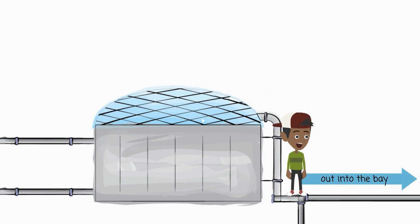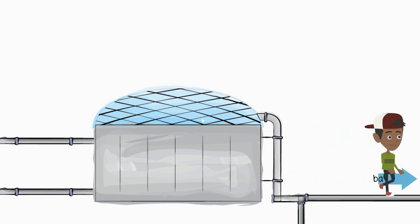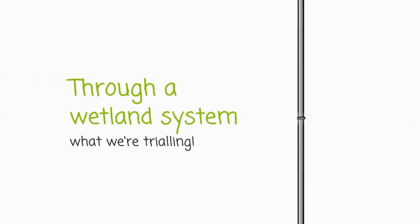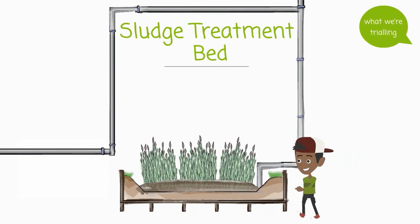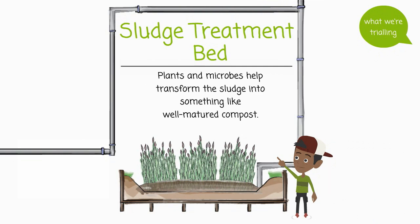After it goes through our current system, the treated water is pumped through a long pipe out into the bay. But what if we could go through a wetland system instead? Solids that come out of the BTF would go into a sludge treatment bed to dry.